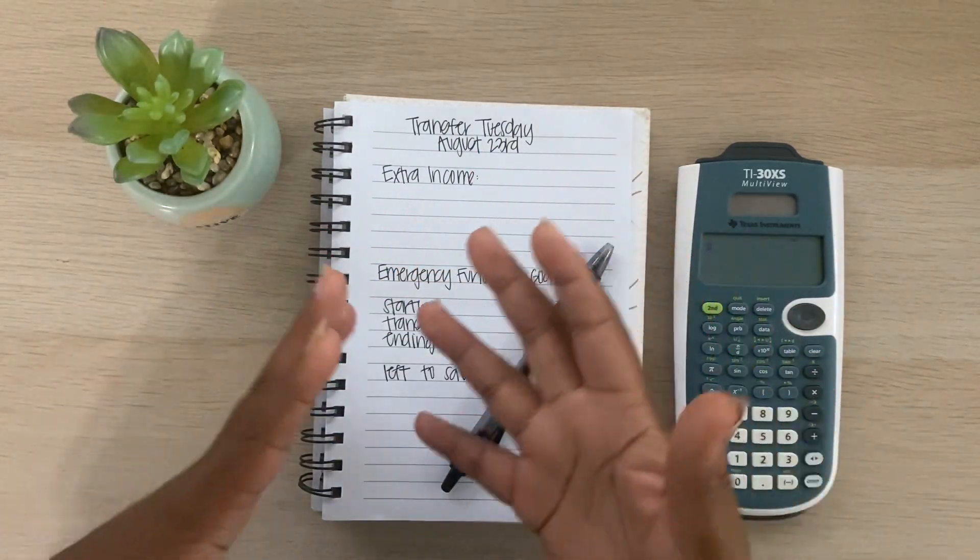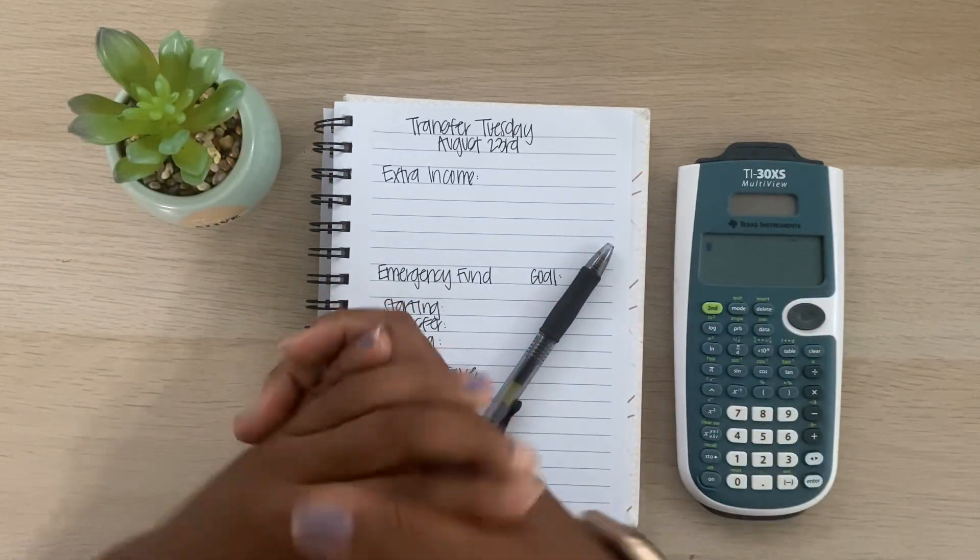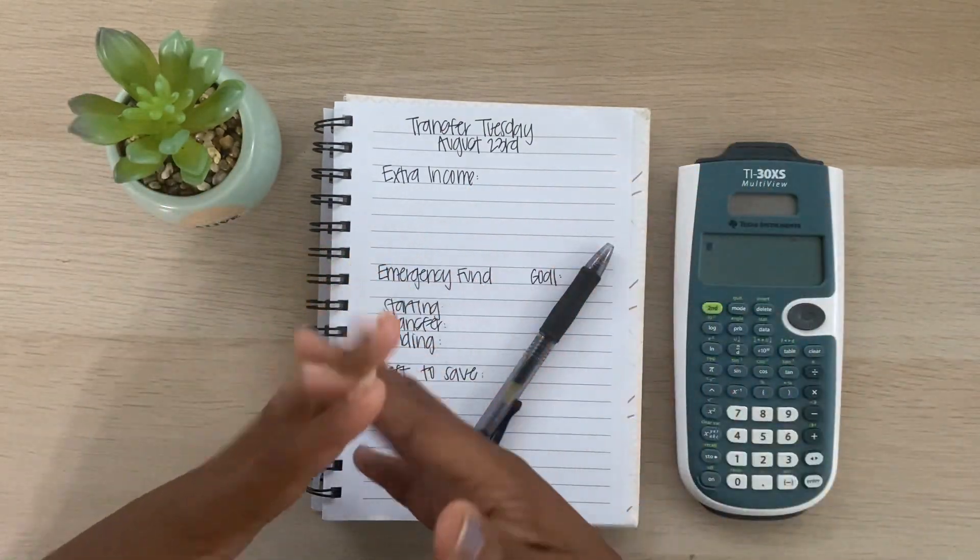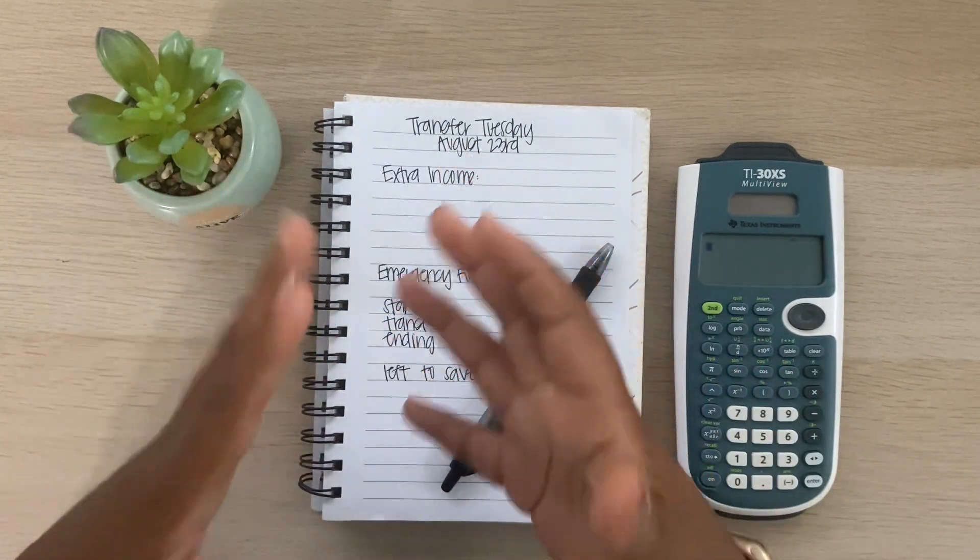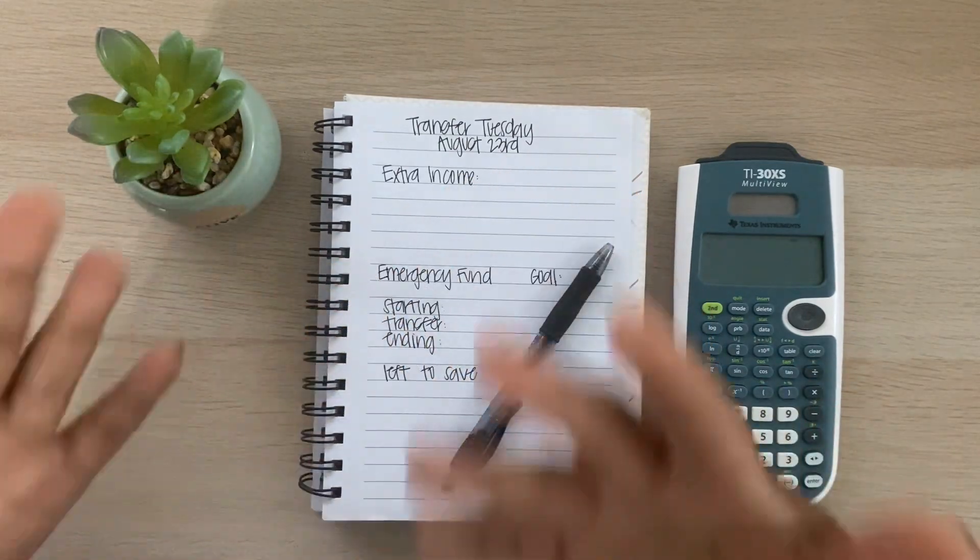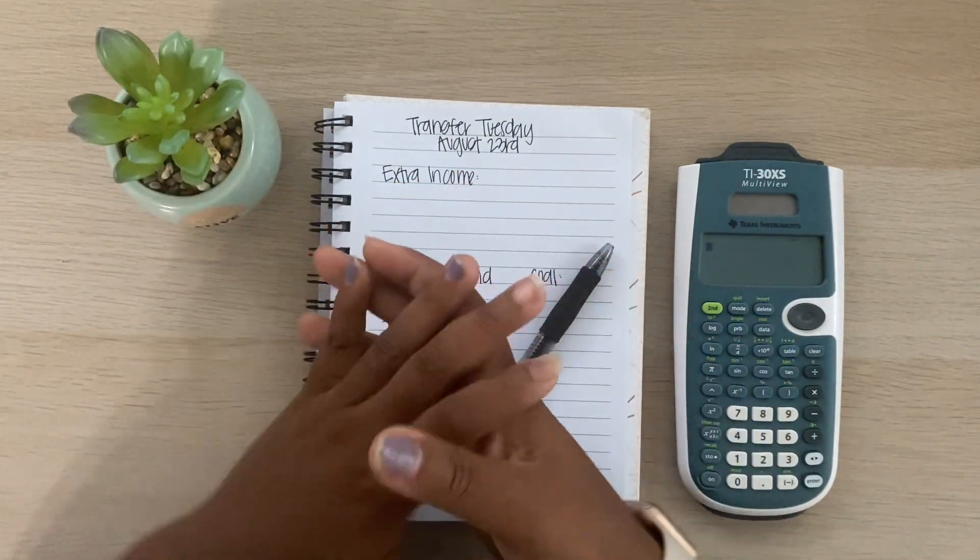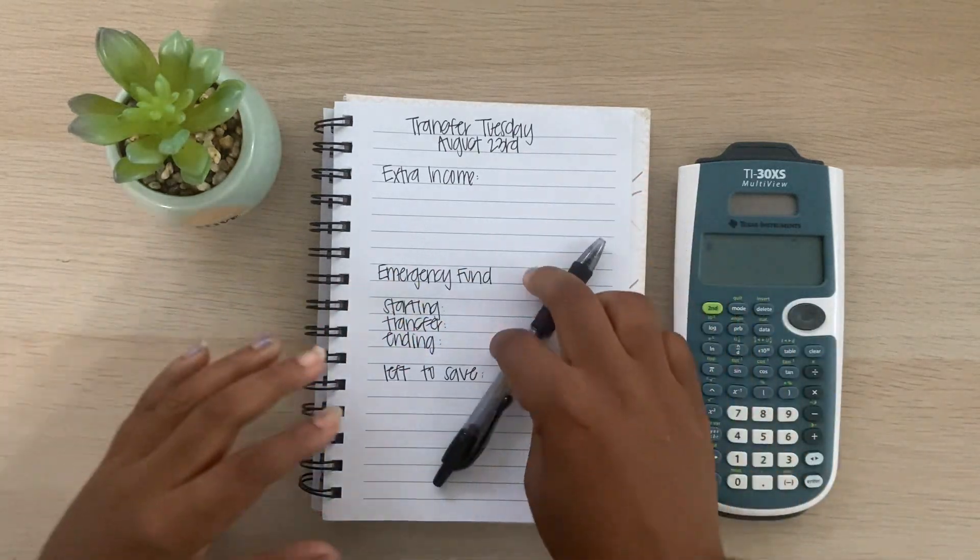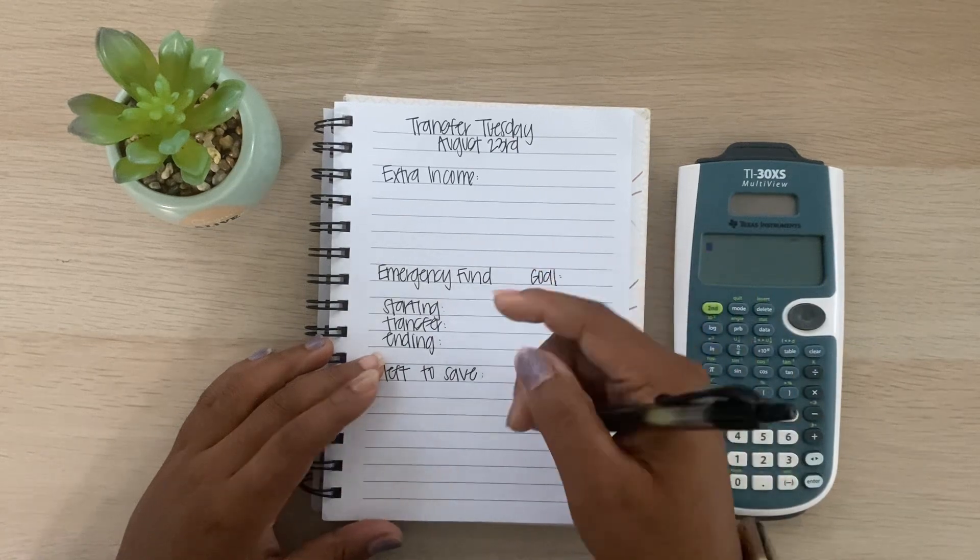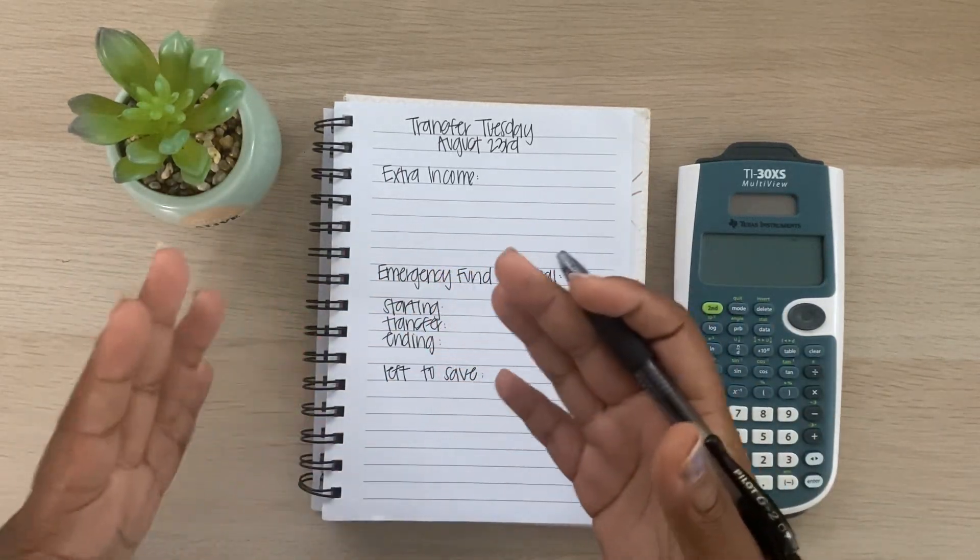But anyways, today's video is my Transfer Tuesday. And so every other Tuesday, I am going to be making transfers towards my financial goals. So if you're new to my channel, the first financial goal that I am starting with is my starter emergency fund. So for the last few weeks, I've been throwing any type of extra income that I have towards building up a starter emergency fund, just so I can feel comfortable in the case of emergency, and then I can move on to some other financial goals. So I'll continue to do my Transfer Tuesday, but some of my financial goals will change. So at the top here, I'm going to list any type of extra income that I was able to earn or set aside to go towards these transfers. And then I'll go through some of the numbers where I've started, the amount that I'm able to transfer, and then the balance and if there is anything left to save.